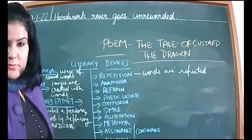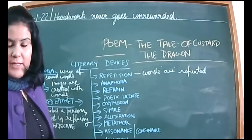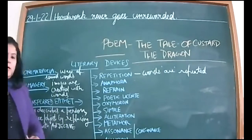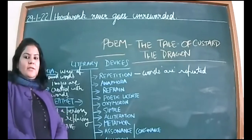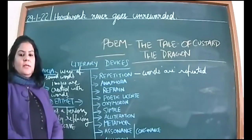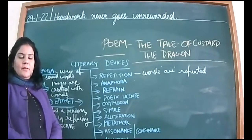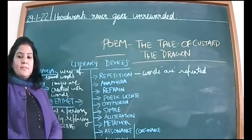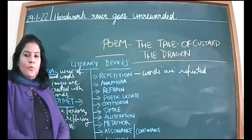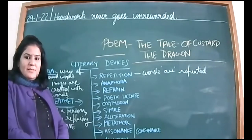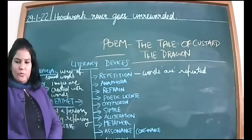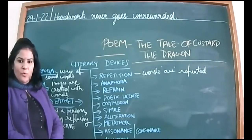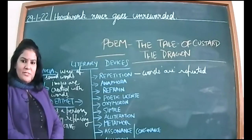Good afternoon to all the students of class 10th D. We had completed the poem 'The Tale of Custard the Dragon' on Thursday. So today we will be discussing literary devices, because this is a very lengthy poem — it is actually a ballad written in the form of a story. A story is there in this poem, that is why it is known as a ballad.